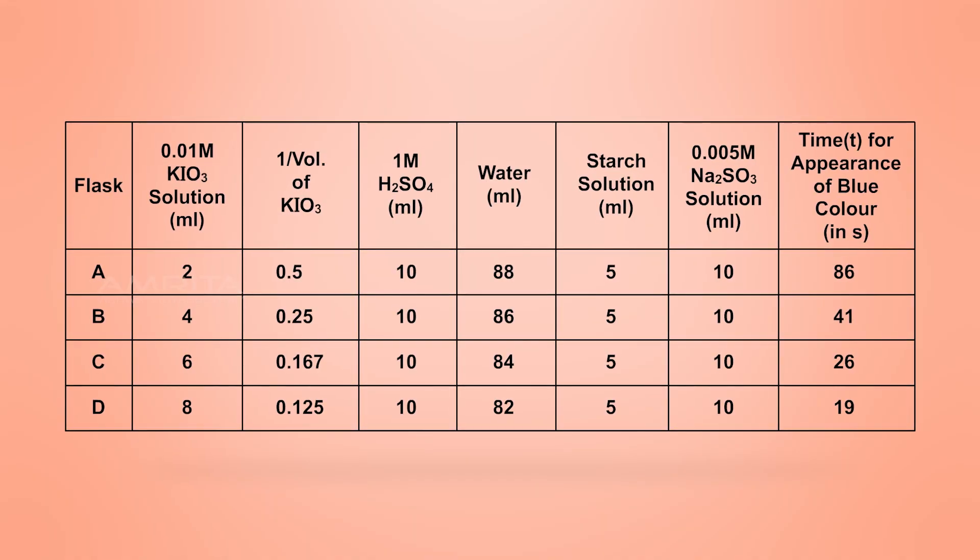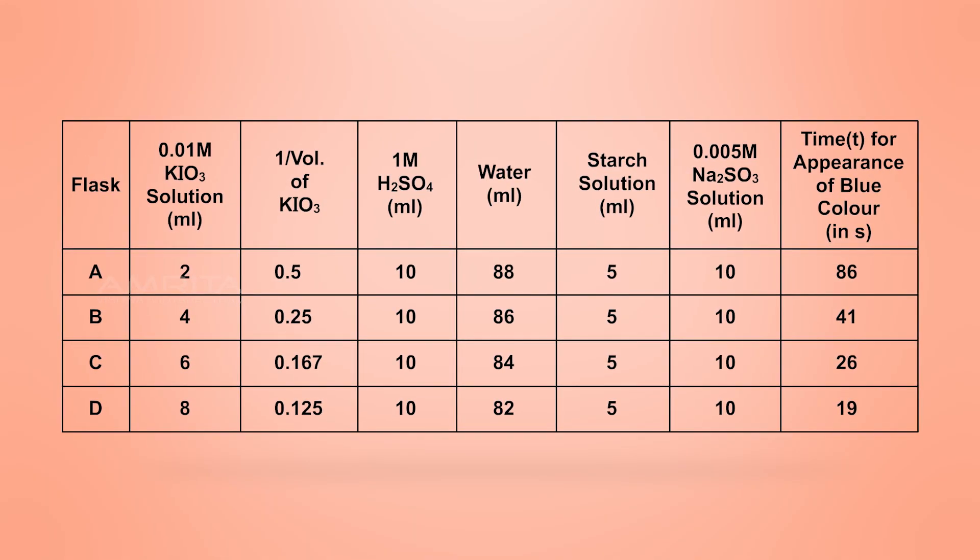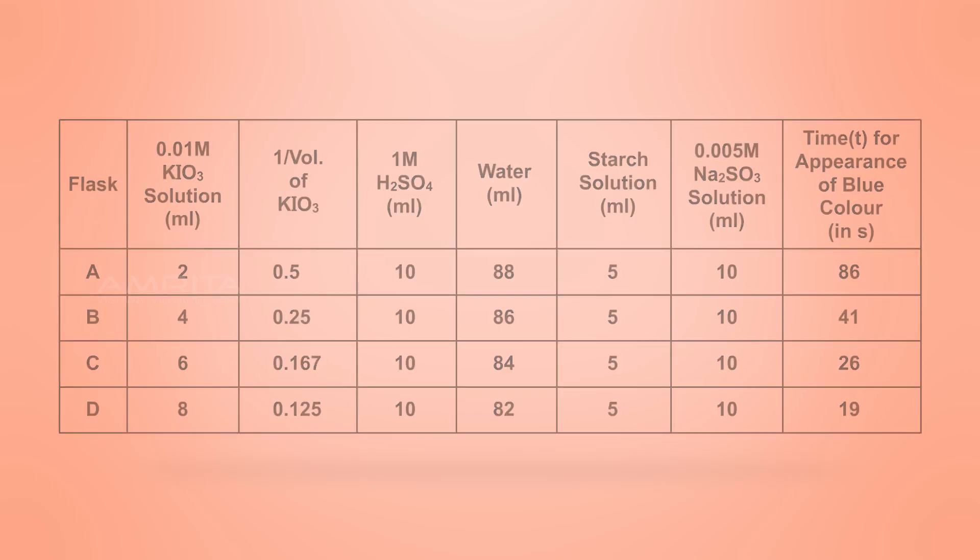Record the observations in a tabular column. Plot a graph between 1 by volume of potassium iodate along the ordinate and time for the appearance of blue colour along the abscissa. The graph should be a straight sloping line.